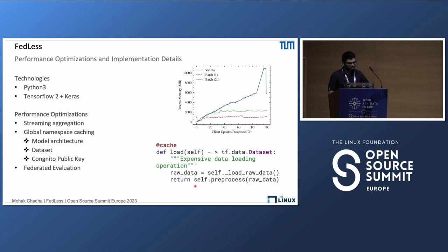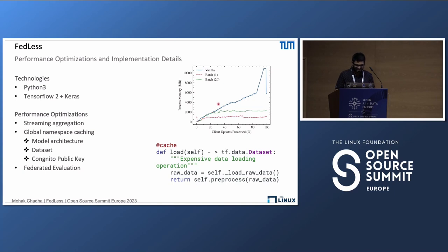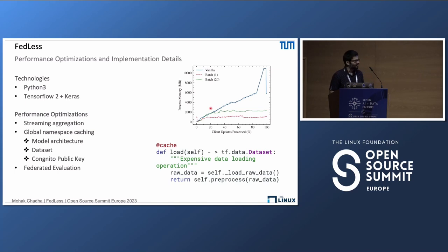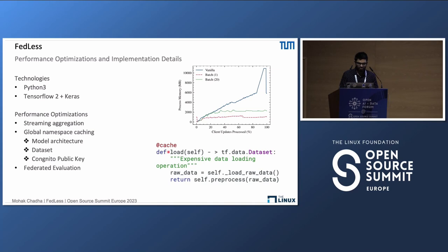The core base of Fedless is entirely written in Python 3 with support for TensorFlow 2+ and Keras. It incorporates built-in performance optimizations such as streaming aggregation, which performs a running average aggregation of updated client model parameters so the aggregator does not have to load all model updates in memory at once. There is also an LRU cache for the global namespace due to the ephemeral stateless nature of FaaS functions, and federated evaluation, which enables client-side evaluation of global models for better, fairer accuracy results.